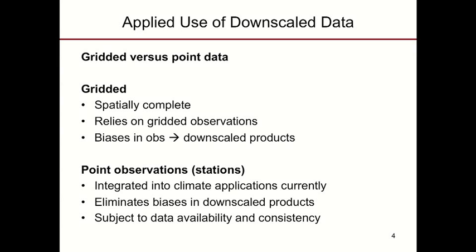It's important to look at how well the core set of observations being put into downscaled data sets actually relate to observations. The alternative is to use point observations. Downscaling to point observations or stations may be useful if current applications are employing a station-based approach, as it eliminates the step of relating gridded data to station data and associated biases. One thing important to think about with statistical downscaling is data availability, longevity, and consistency — though if there are changes in the way data was recorded through time, that will severely limit the usefulness of these statistical methods.